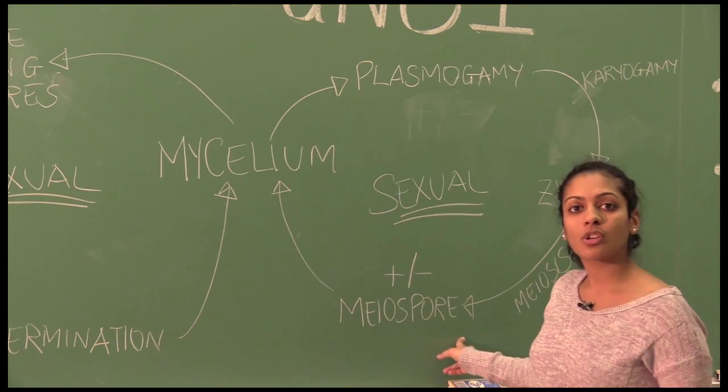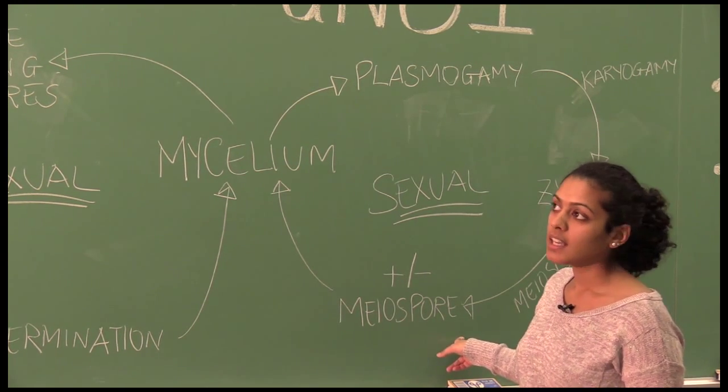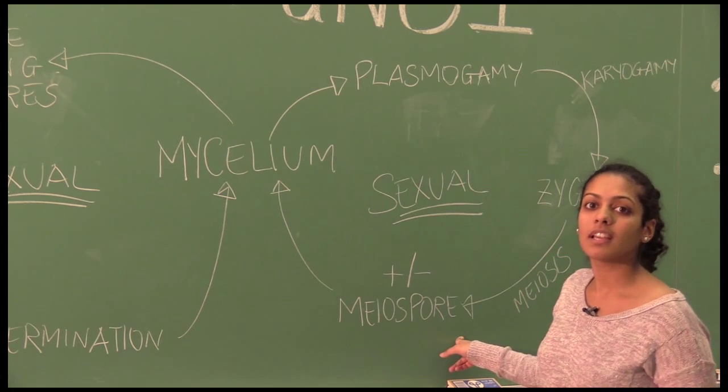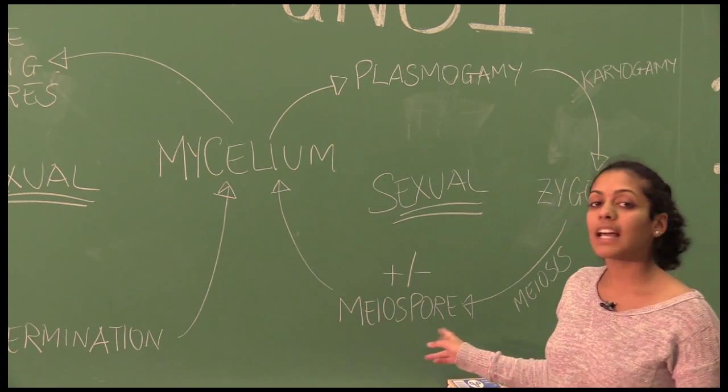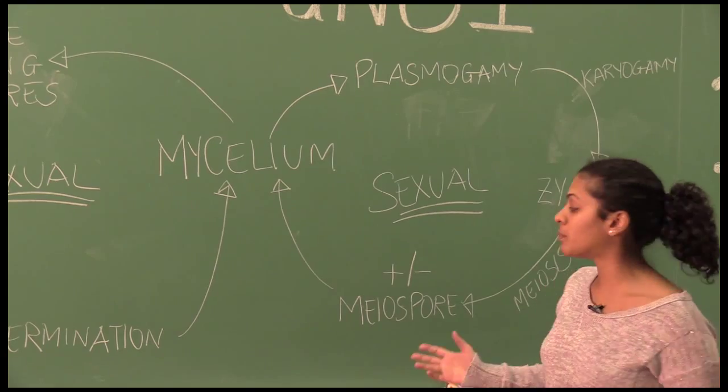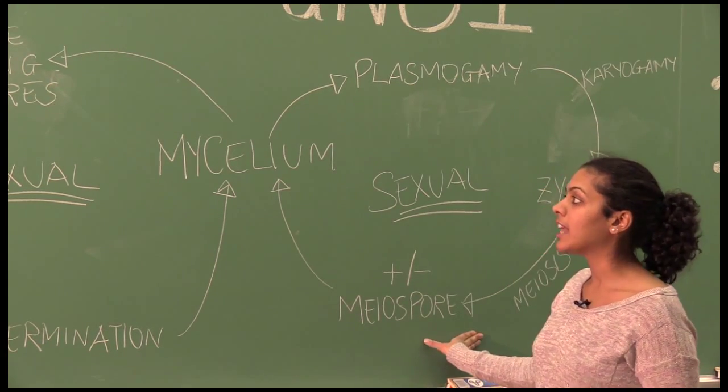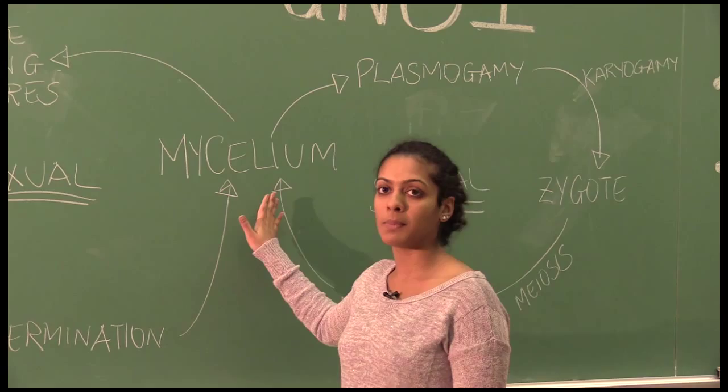In the case of ascomycota, this fruiting body is called an ascus. In the case of basidiomycota, it is called a mushroom. And that fruiting body then gives rise to more haploid spores, or meiospores. And the meiospores go on to produce mycelium.